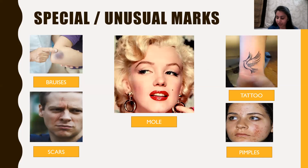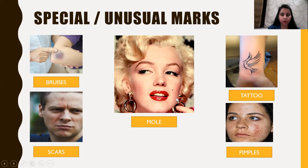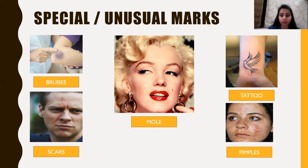Now, special and unusual marks: bruises are blue-colored wounds from falls or accidents, and scars are marks left on the body. Moles are tiny black spots on the body. A person can also be described by tattoos — for example, 'the person with a bird tattoo' or 'the person with a name tattoo.' Some people also have pimples on their face, which can be used in their description.